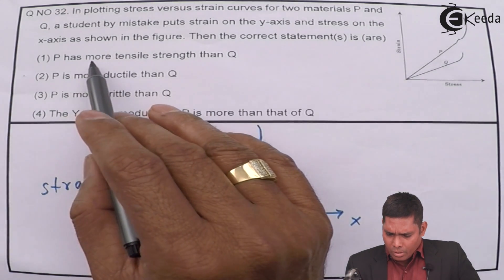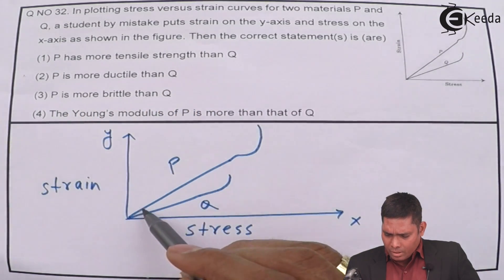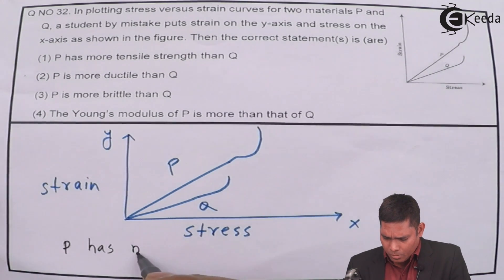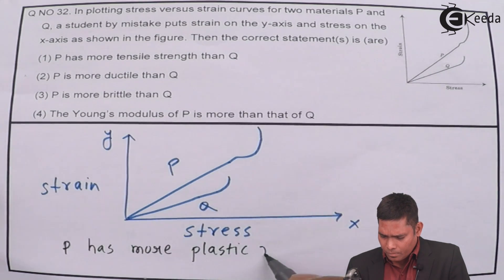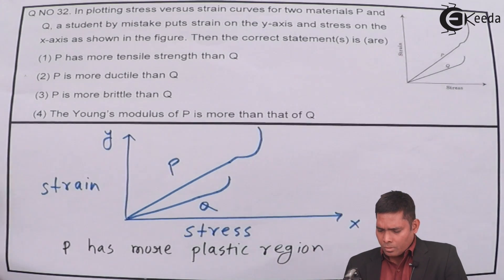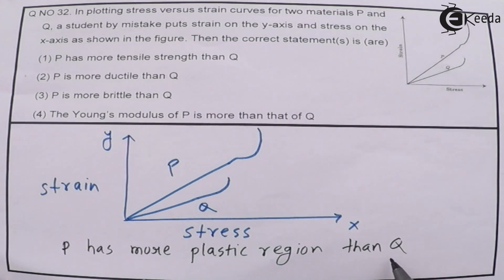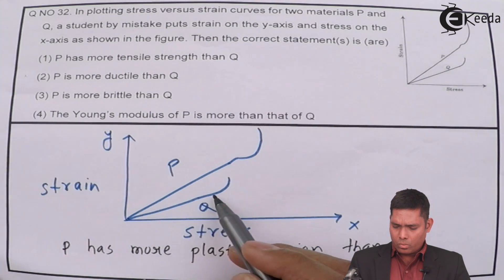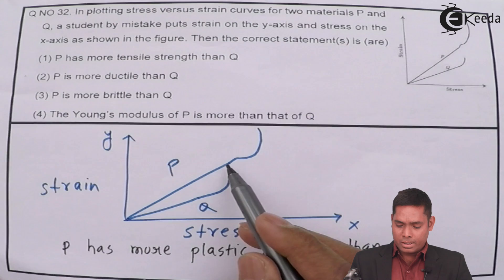Now, P has option one: P has more tensile strength than Q. You can see that the plastic region of P is more. P has greater or more plastic region. So P has more plastic region than Q. That means the material P has more tensile strength.